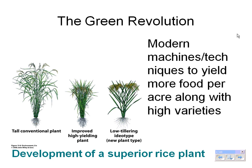The first objective says to define the Green Revolution, give positives and negatives, and to know how it has helped developing countries. The definition is using modern machines and techniques to yield more food per acre, along with high-yield varieties.